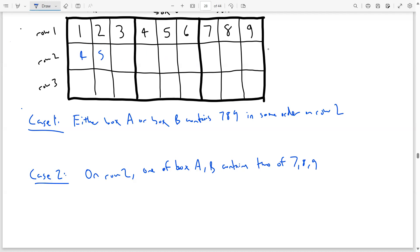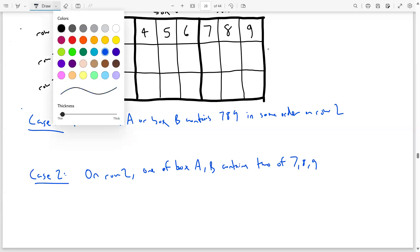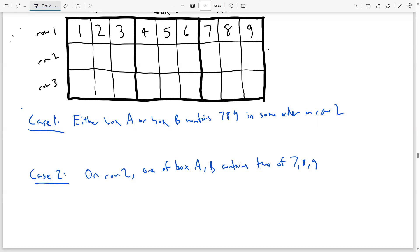So once we choose a box A or B to put 7, 8, 9, this is going to uniquely determine the number of ways we can place the numbers in row 2 without regards to ordering. And so the number of ways to accomplish case 1 is simply 2.